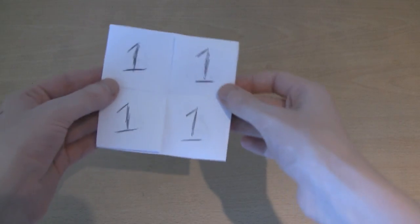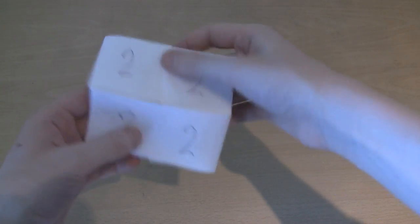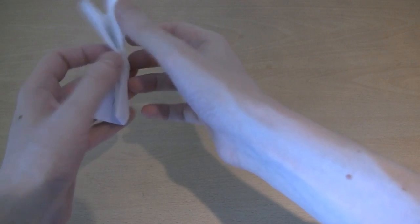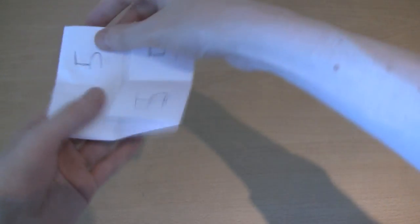Now we can start labeling the faces. This is face one. There we go. There's face two. Open it up. There's face three, and there's face four. We go back to one again, but I can keep going. There's face five, and there is face six.